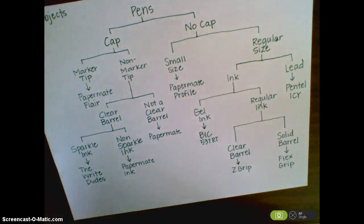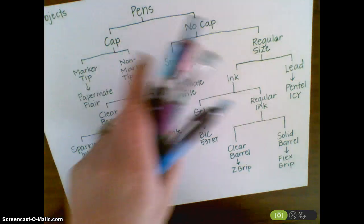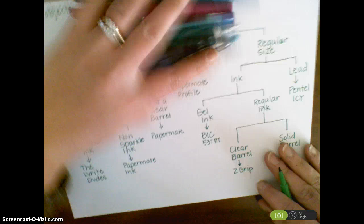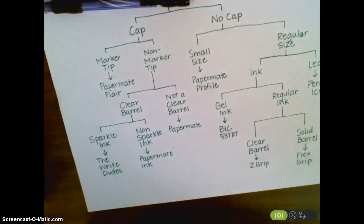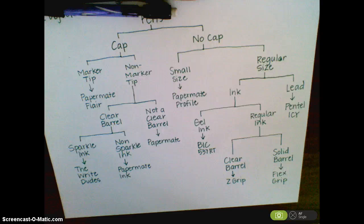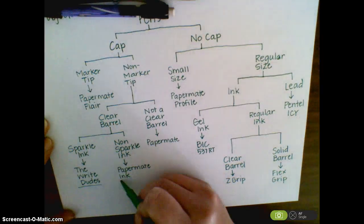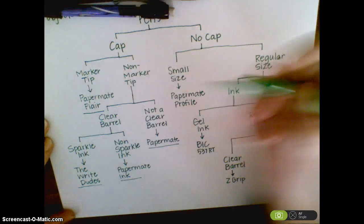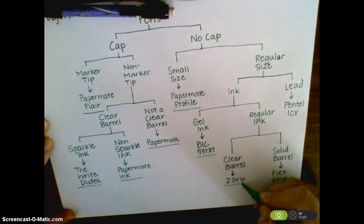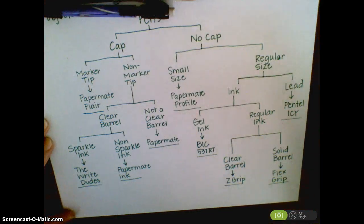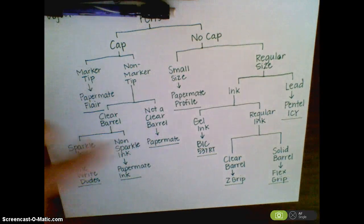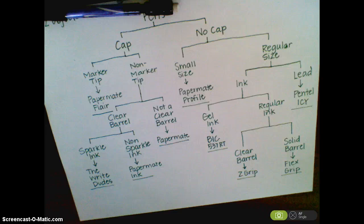Now I've taken care of categorizing every single one of these pens. Here were all the pens I started with, and as I look at my dichotomous key you should be able to see that at the bottom there's an arrow for each pen. The number of arrows should tell me how many pens I have in my entire collection.